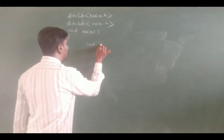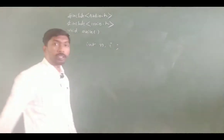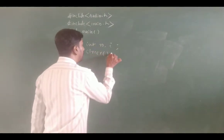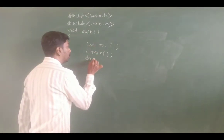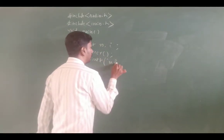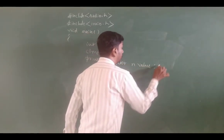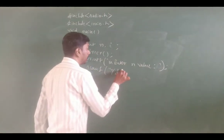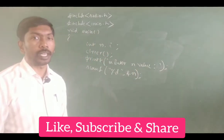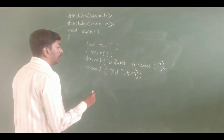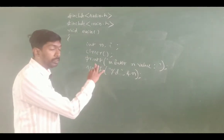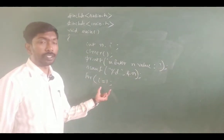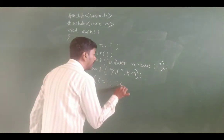We declare variables int n and i. Next we call clrscr to clear the screen. First we accept the n value using printf to display 'enter n value', and scanf %d with &n to read it. Then we write the for loop: for i equals 1 as initialization, i less than or equal to n as the condition, and printf %d, i to print the value.